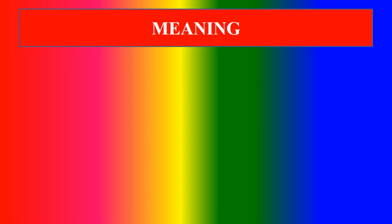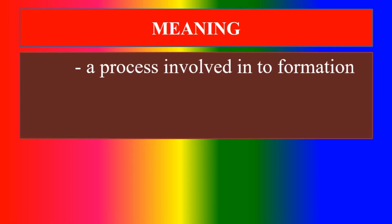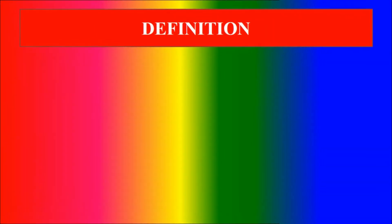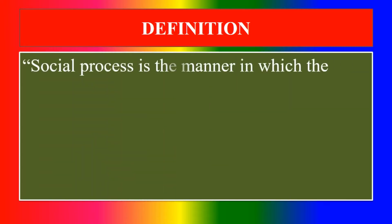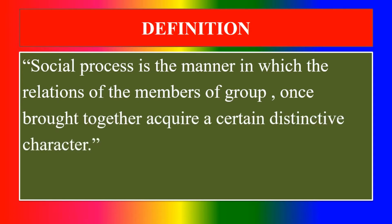What is meant by social process? A process involved in the formation of groups of persons. Social process is the manner in which the relations of the members of a group, once brought together, acquired a certain distinct character.